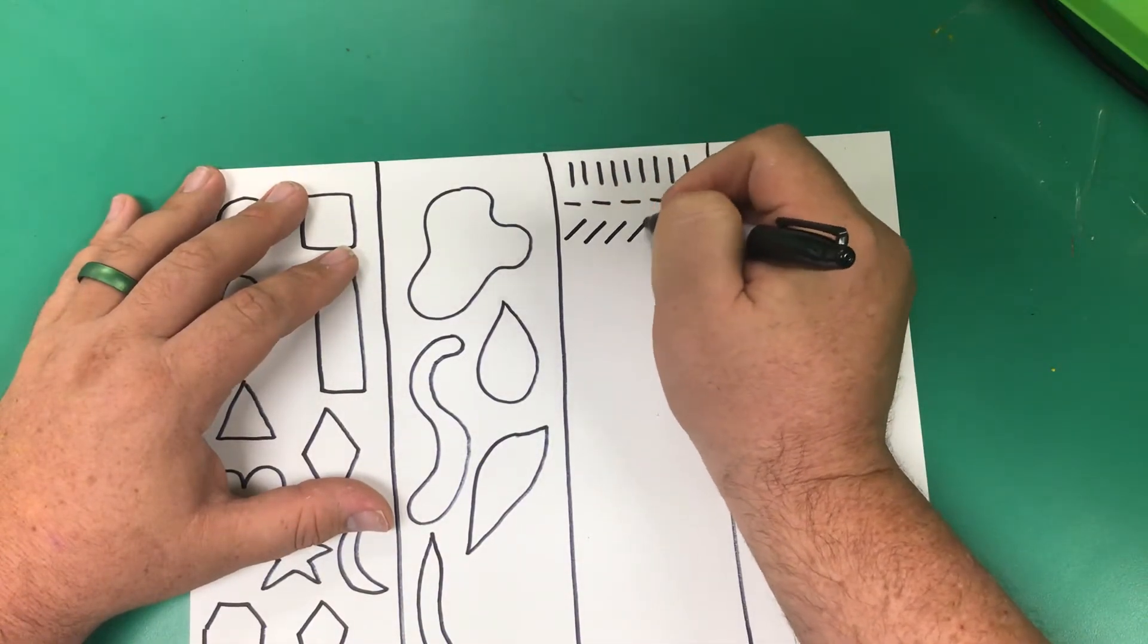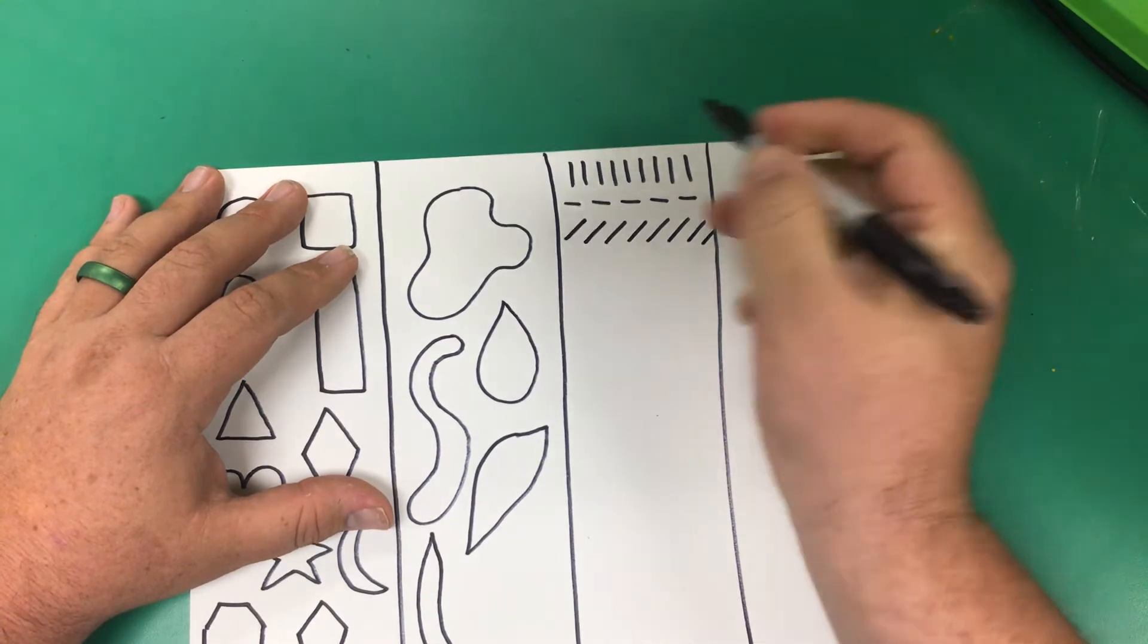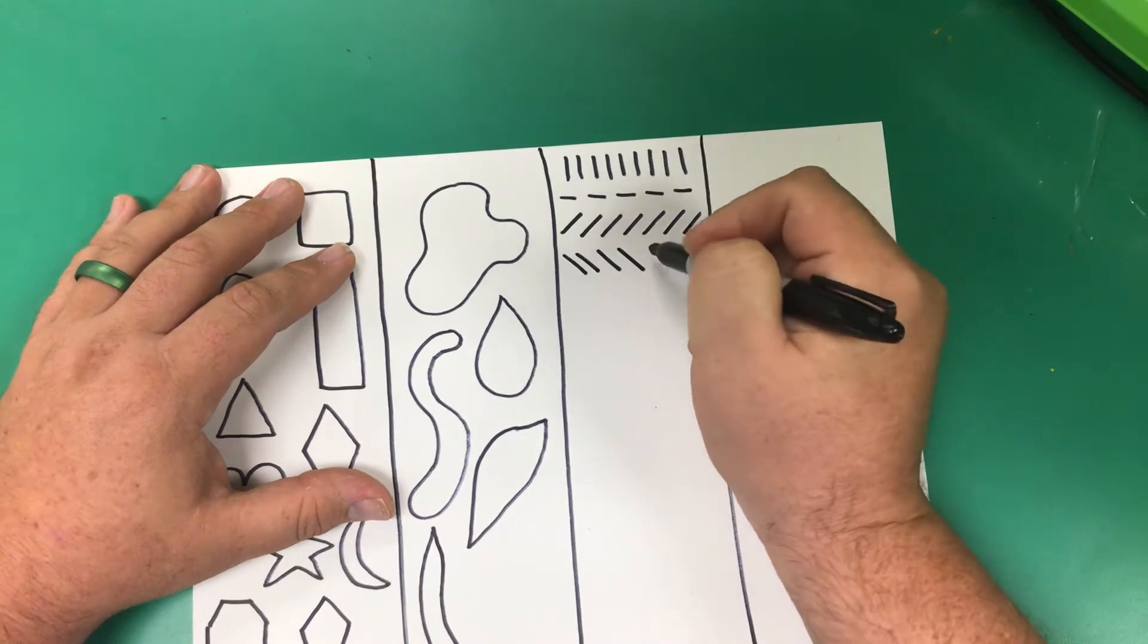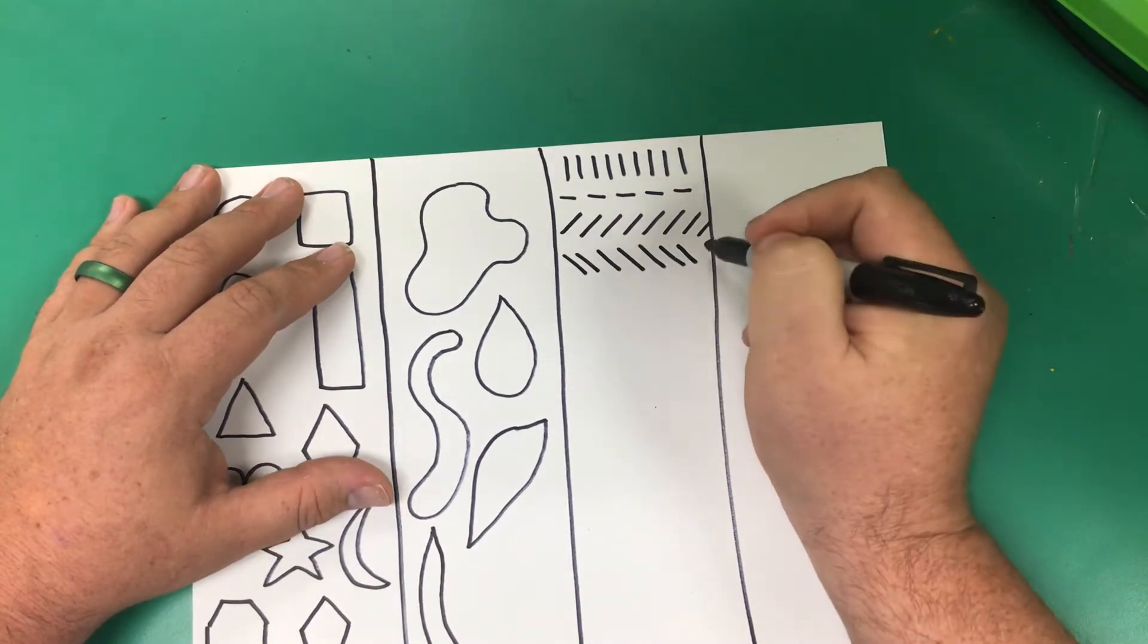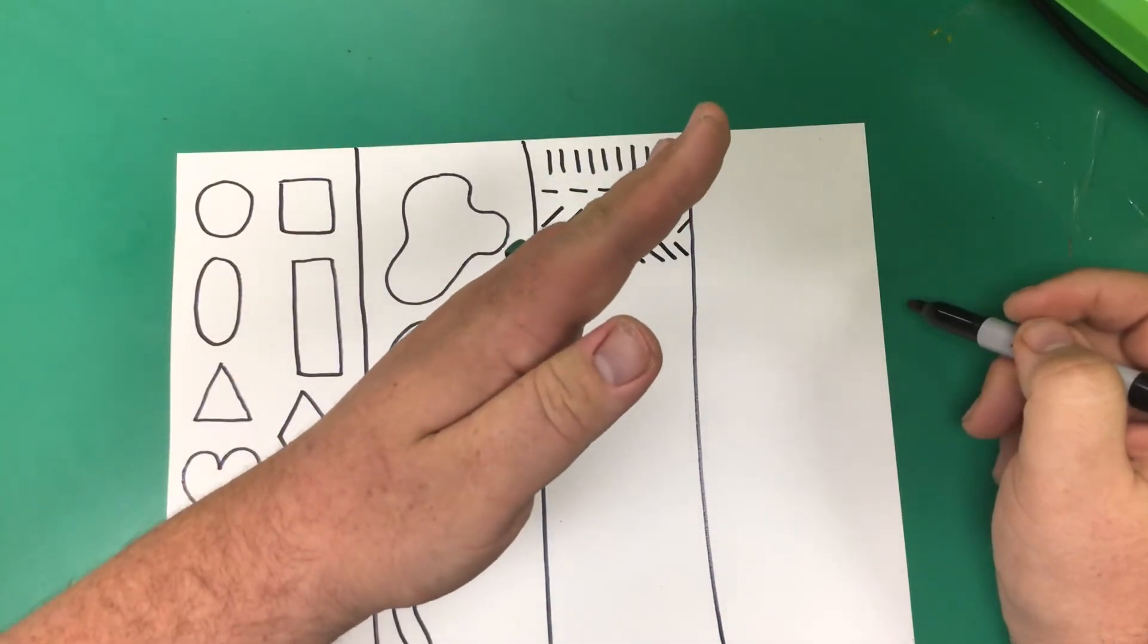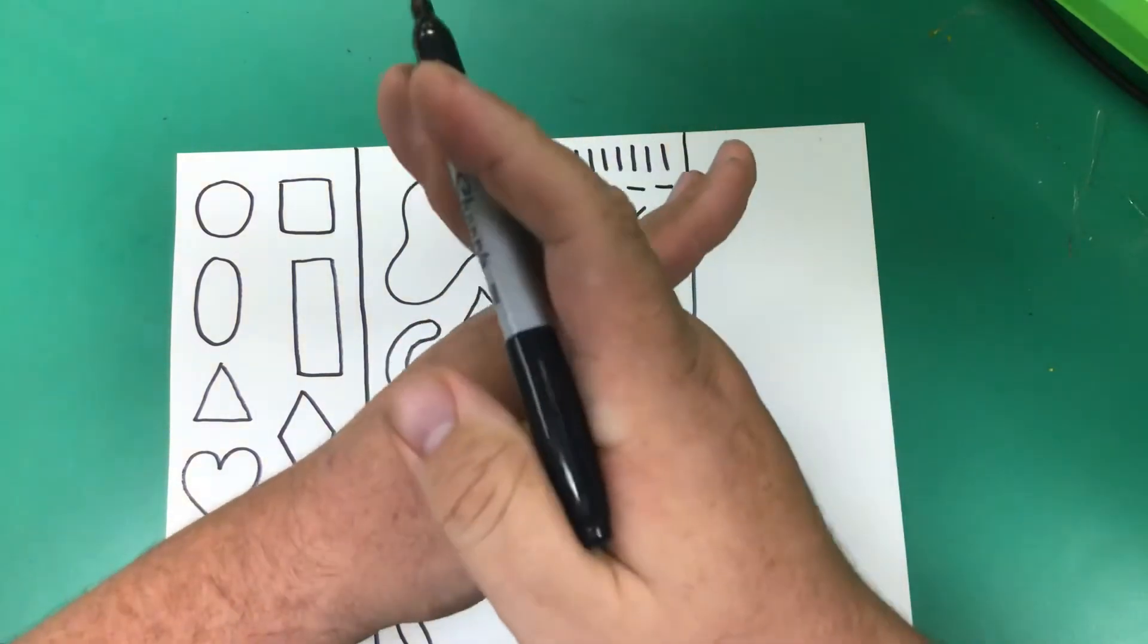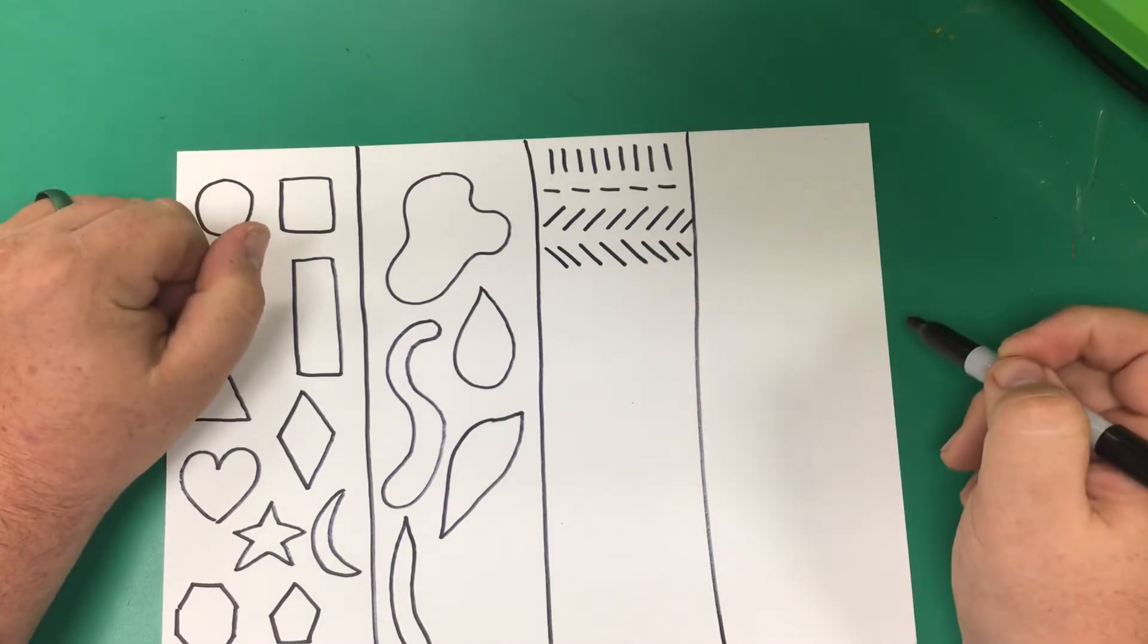Next we're going to do a row of diagonals. Diagonals are kind of in between horizontal and vertical. It's not straight up and down, it's not straight side to side, it's at an angle. It's diagonal, like a sliding board, or half of a letter X. That's a diagonal.